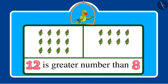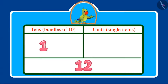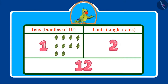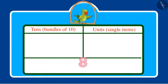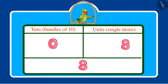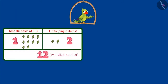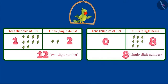So children, you saw that 12 is a greater number than 8 because 12 has a ten — meaning 10 items like 10 leaves — and 2 units, meaning 2 single items like 2 leaves, so total is 10 and 2, which is 12 leaves. And 8 has 0 tens and 8 units, which means 8 single items such as 8 leaves. Therefore, 2-digit numbers such as 12 are greater than single-digit numbers such as 8.